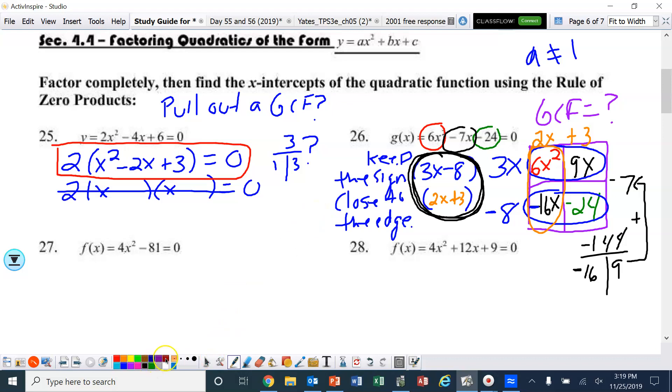Now, number 27, that is a difference of two squares. You notice there's a minus sign between them, and the 4x squared is a perfect square, and the 81 is a perfect square. So that means we're going to take the square root of 4x squared, which is 2x, and the square root of 81 is 9. So we're going to split this into 2x plus 9 and 2x minus 9.